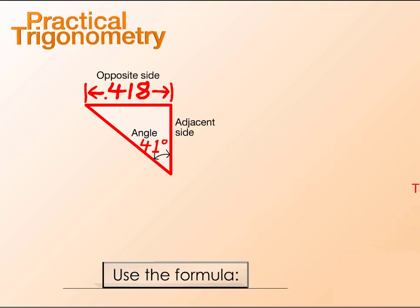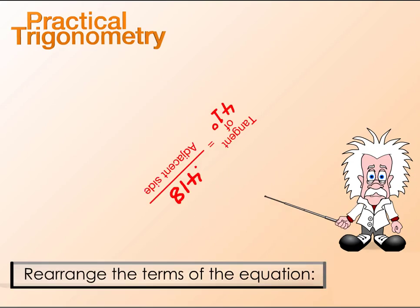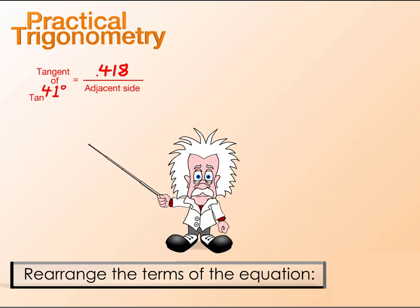In this example, use the formula tangent of the angle equals the opposite side length divided by the adjacent side length. Use algebra to rearrange the terms of the equation and solve as shown.